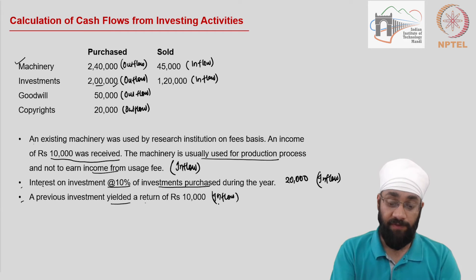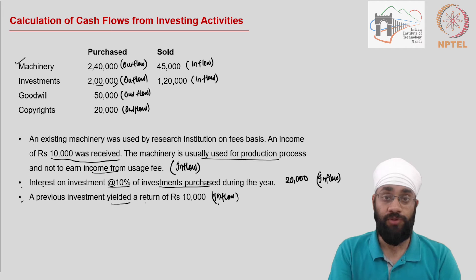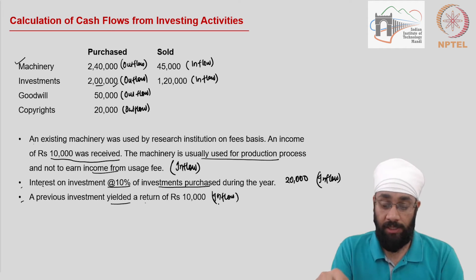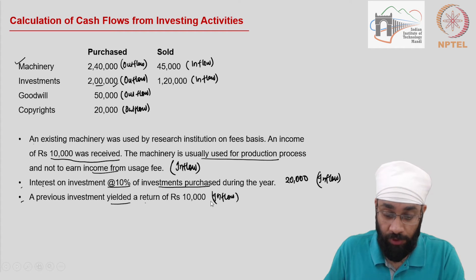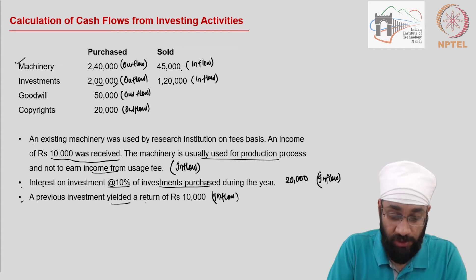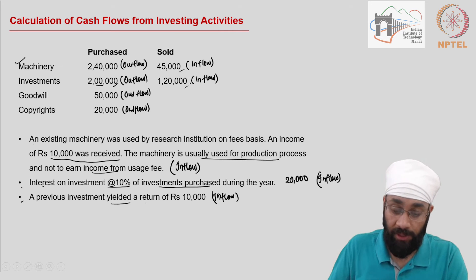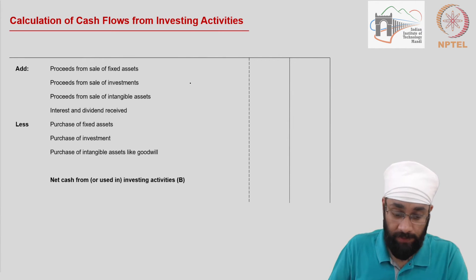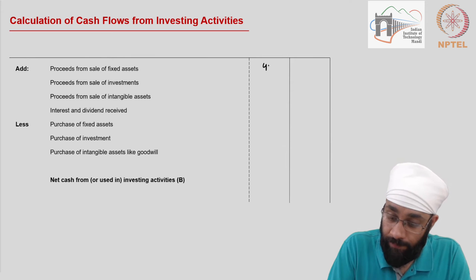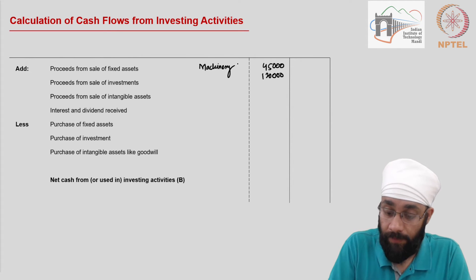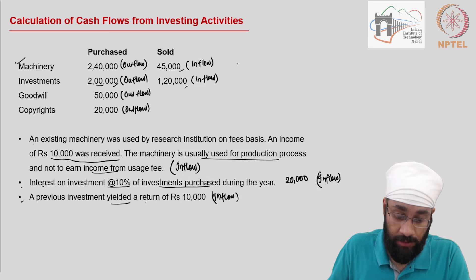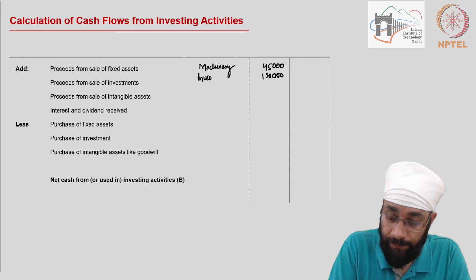So that's it — we have identified the inflows and outflows. All we need to do is post these amounts in the statement. Let's put the inflows first. So machinery sale 45,000 and investment sale 120,000 — these are the machinery and the investment inflows.